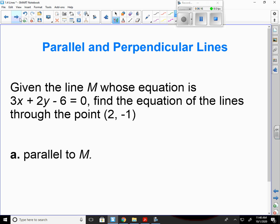Given the line M, whose equation is 3x plus 2y minus 6 equals 0, find the equation of the lines through the point (2, -1) that's parallel to M, and then for the second part, perpendicular to M.